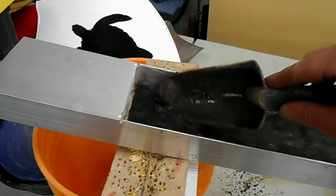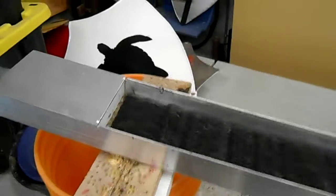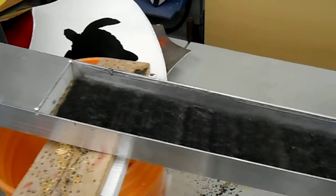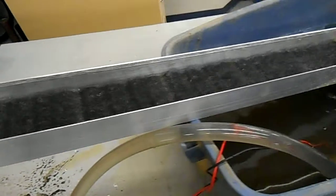I've started converting over my high bankers to Gold Hog products. My big high banker I have the top half Gold Hog matting and the bottom half expanded metal over miner's moss.